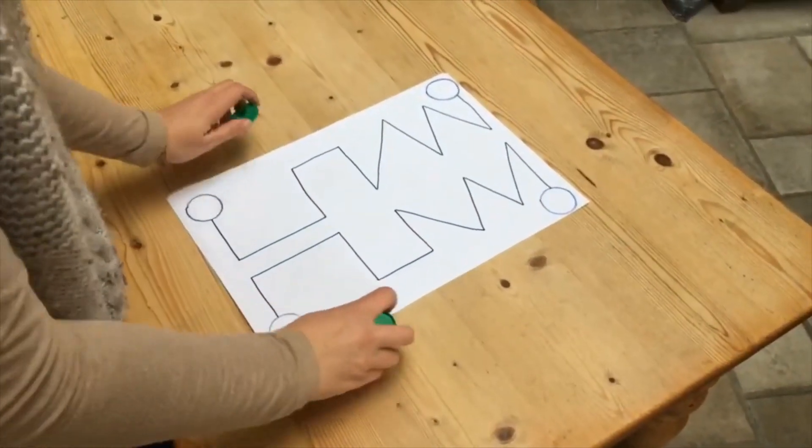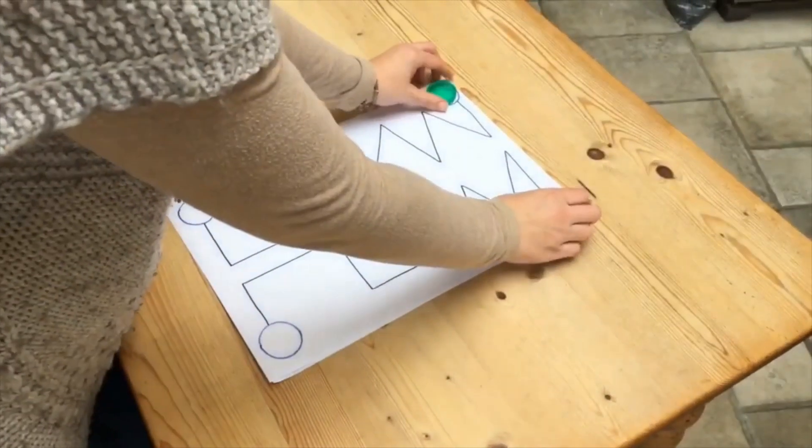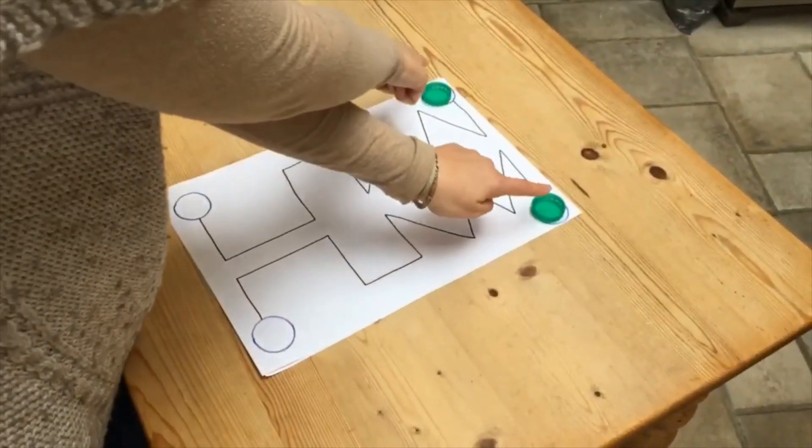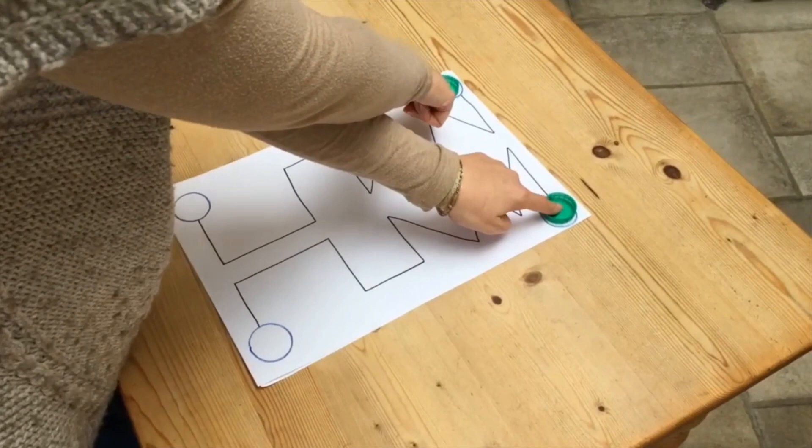But if you want to make it super tricky, cross your arms over. You've got to keep them at the same time. Off we go.